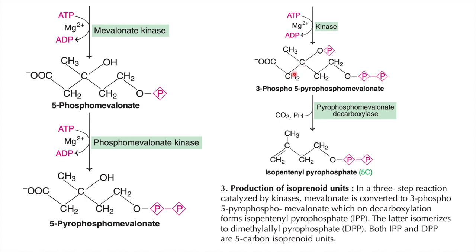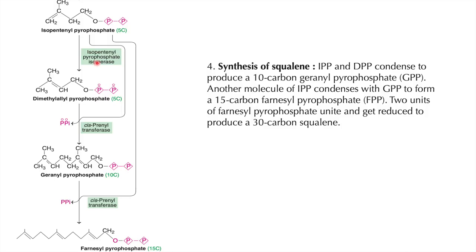Next, the enzyme pyrophosphomevalonate decarboxylase causes decarboxylation — carbon dioxide is released, a double bond forms, and the phosphate group is removed. This gives isopentenyl pyrophosphate, which is the basic unit for synthesis of all terpenes and cholesterol.